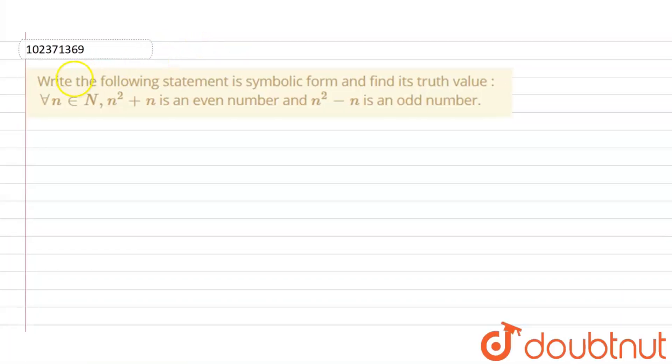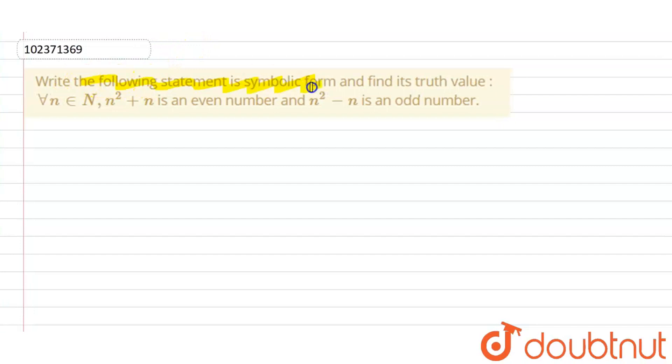Hello guys, question is: write the following statement in symbolic form and find its truth value. Where n belongs to N, n square plus n is an even number and n square minus n is an odd number. So, this is our statement. n² + n is an even number and n² - n is odd number. So, let's do this.